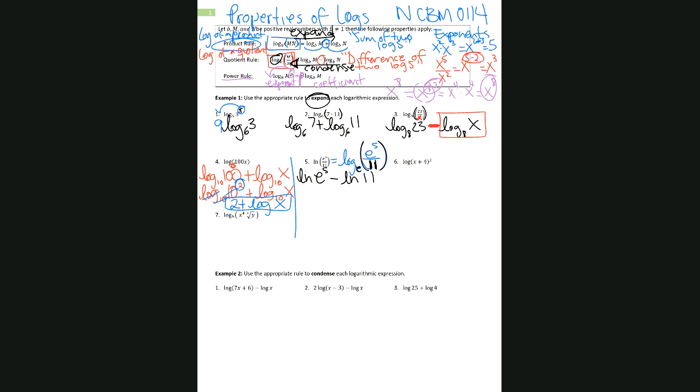Just like we used the rule that taking the log of 10 with base 10 simplifies, here since it's ln — base e — we're taking the log of e with the same base, so we can cross that out and the answer is just 5. So to simplify this further, we have 5 minus the natural log of 11.